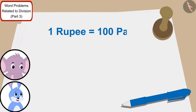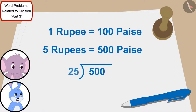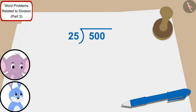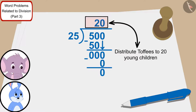We will have 5 rupees left, and since one rupee is equal to one hundred paise, five rupees is equal to five hundred paise. Now it is very easy — we only have to divide 500 by 25, Bunny said to Appu.